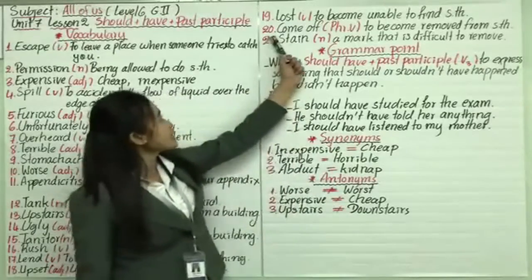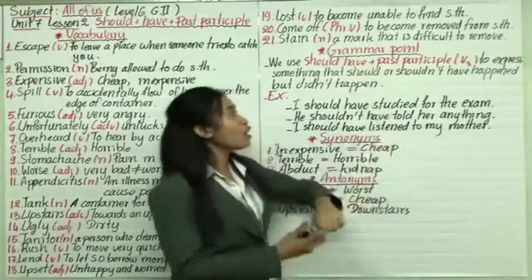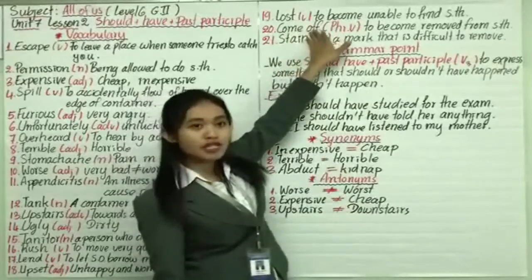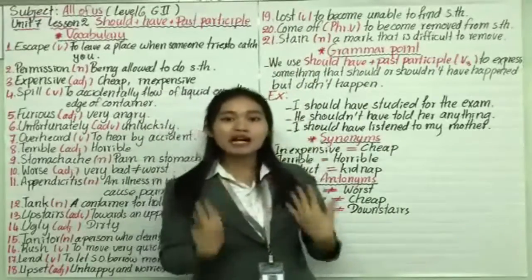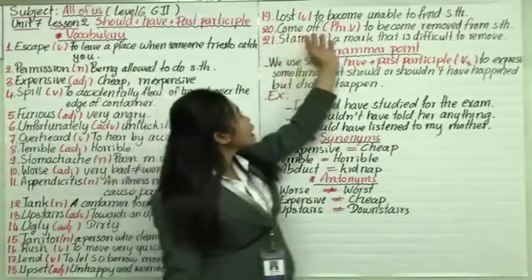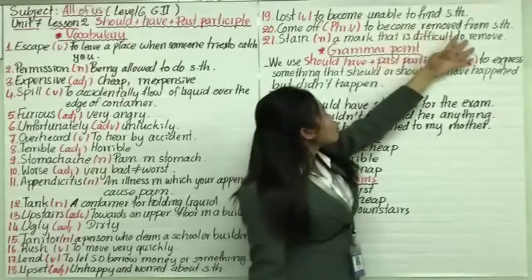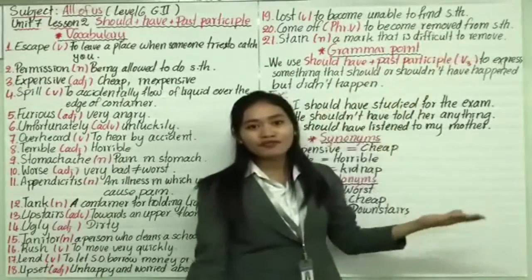Number twenty, come off. Come off functions as phrasal verb because come is a verb plus a preposition. When verb comes with preposition, it becomes phrasal verb. So come off here means to become removed from something, or we can say removed.